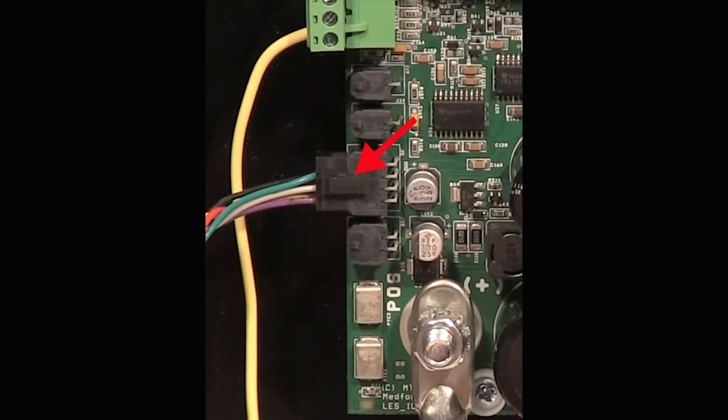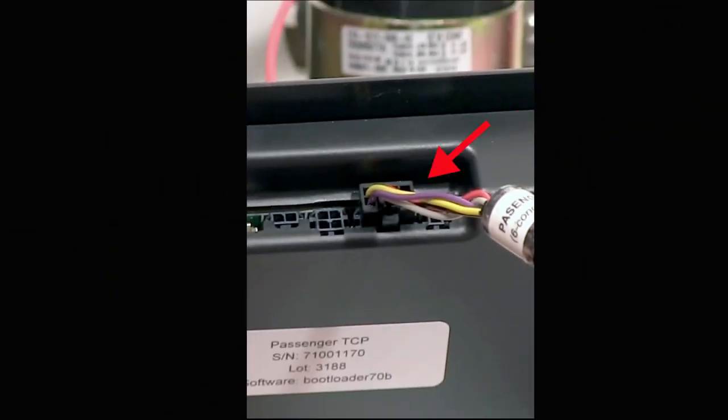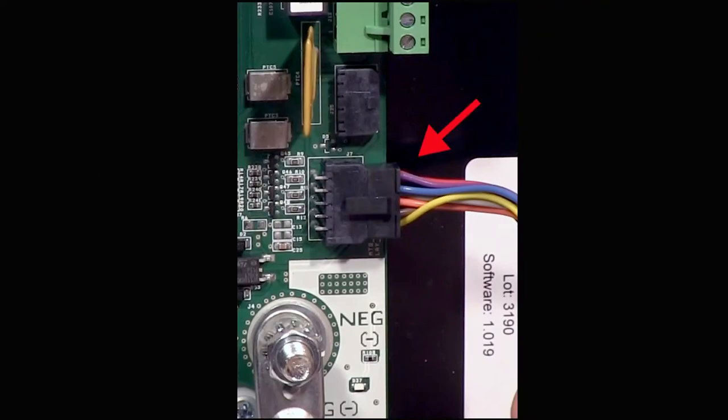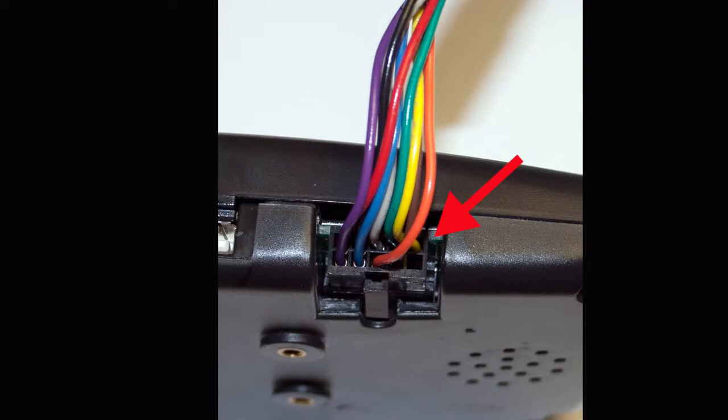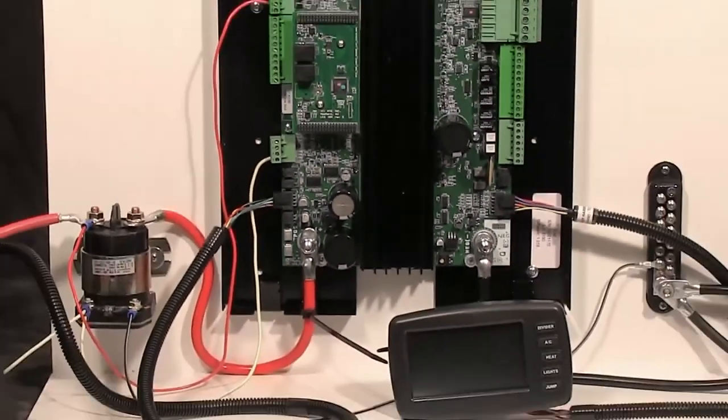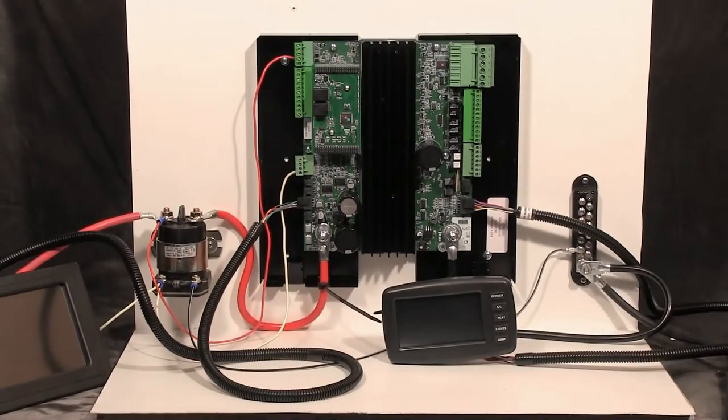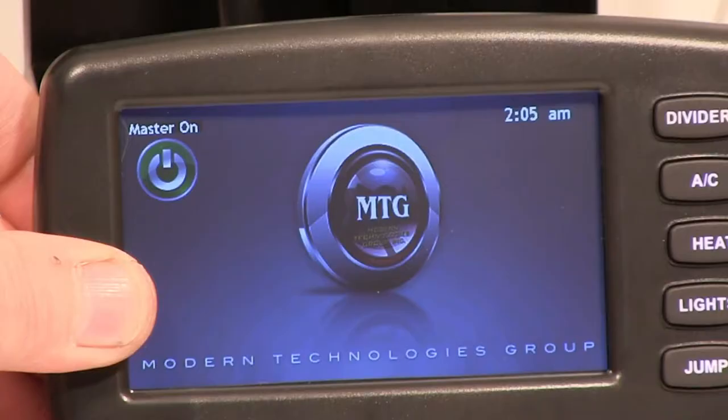Connect the rear controller cable into the IOM. Connect the other end of the cable to the rear controller. Connect the front controller cable into the IOM. Connect the other end of the cable to the front controller. You have now completed all power and ground connections necessary to power SmartTouch. Turn on the ignition key and both front and rear controllers should turn on. If all connections are correct, you will have a green ring showing around the master on button.